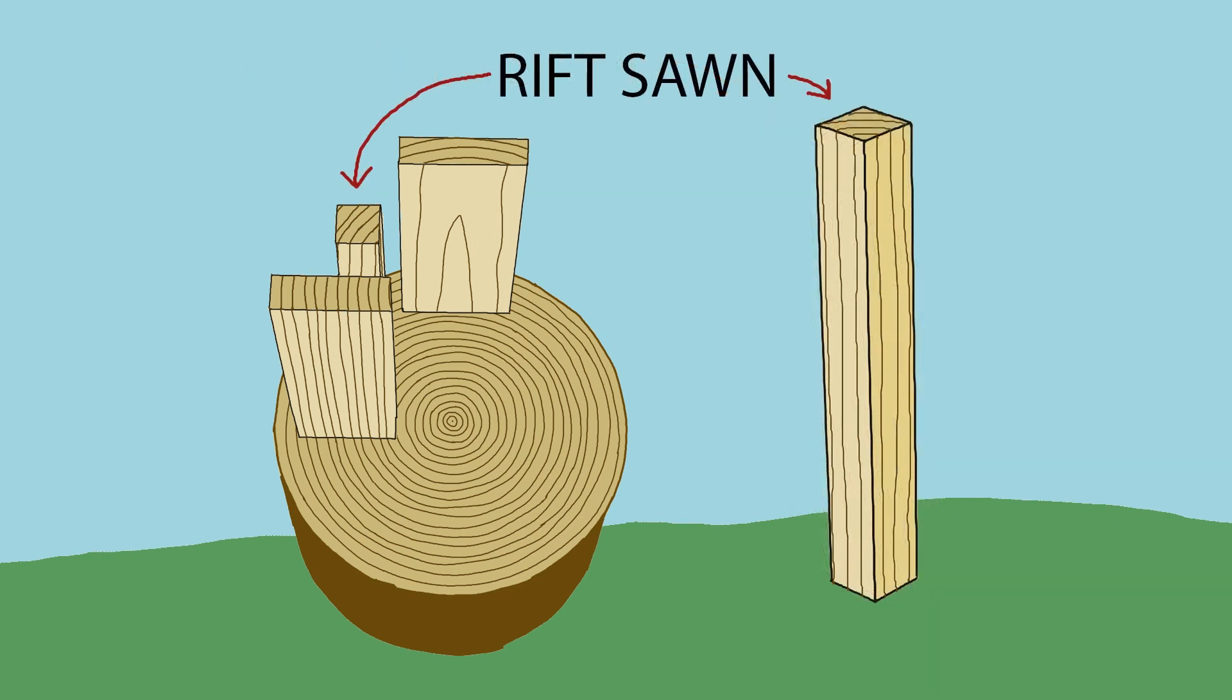The face of a rift sawn board has grain that falls somewhere between plain and quarter sawn. In this example, the faces and edges would measure the same, and the grain on all four sides would look very similar. This is sometimes desirable, as in a table leg.